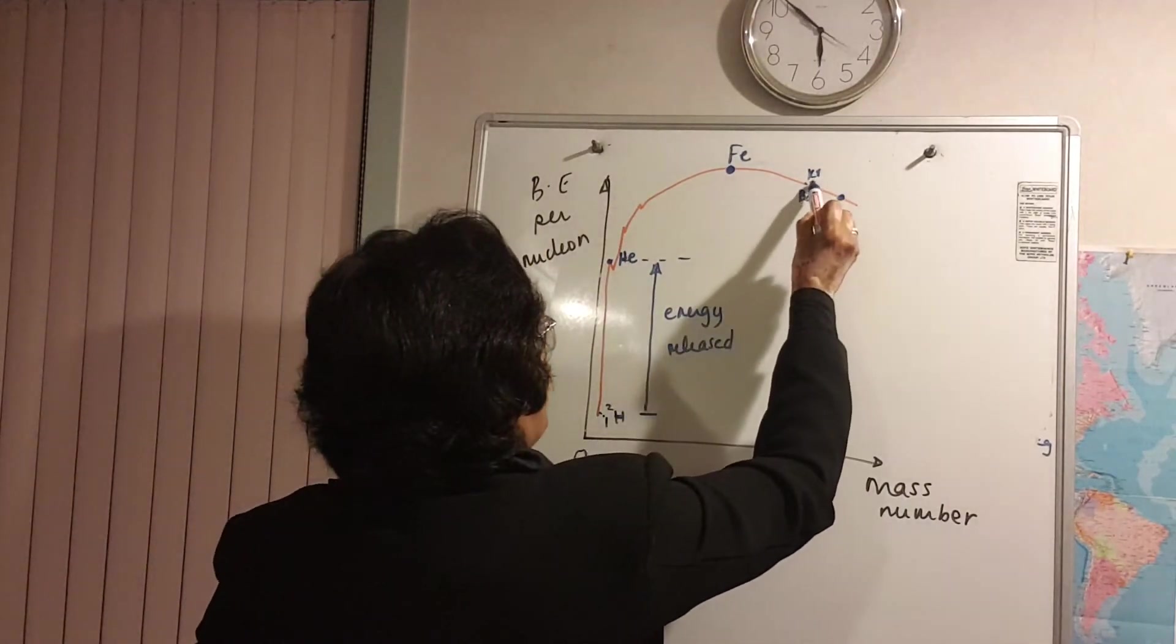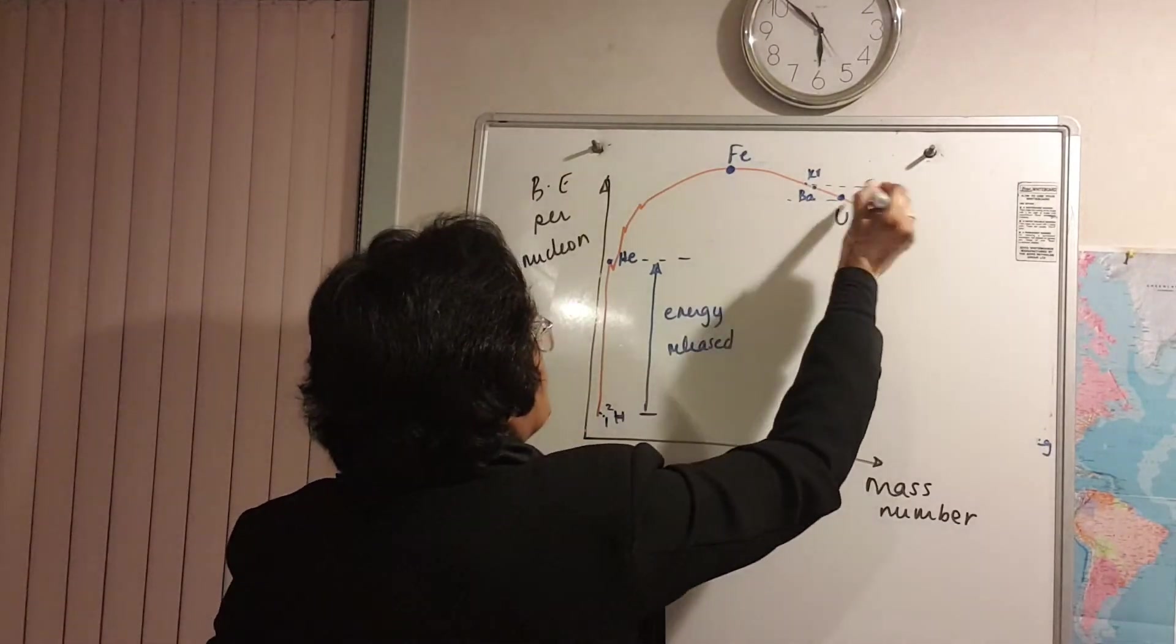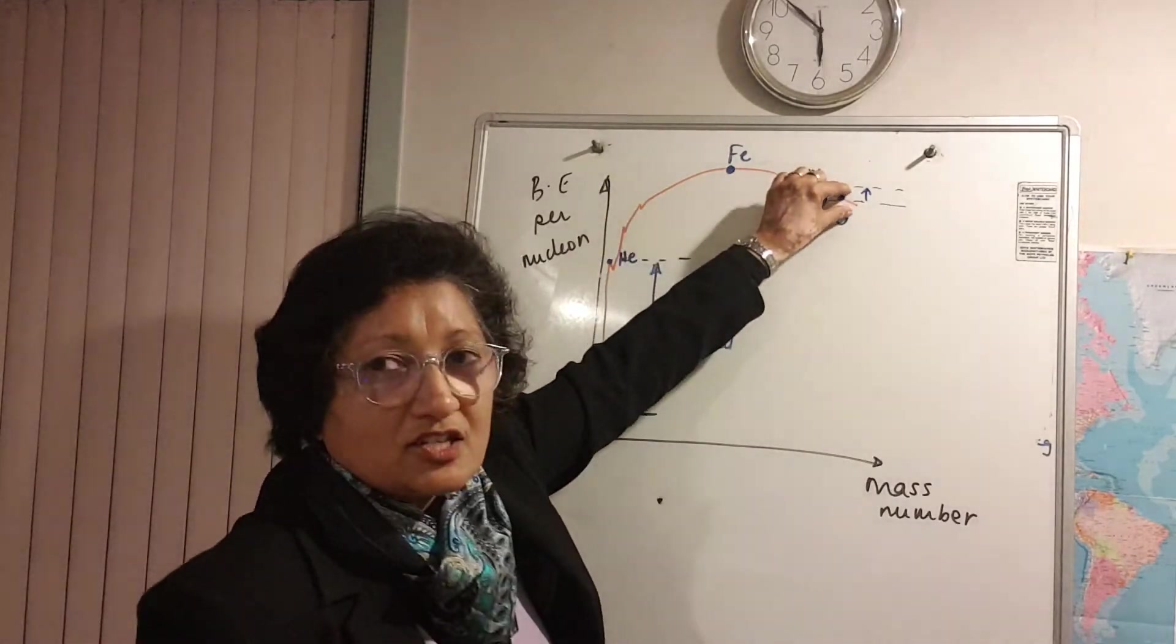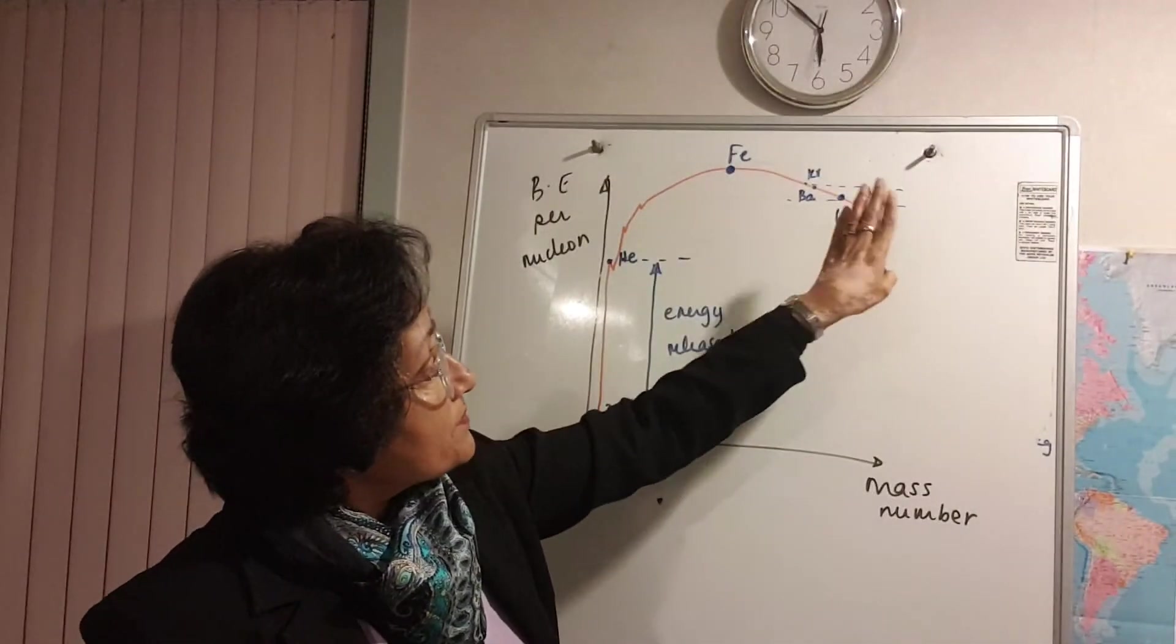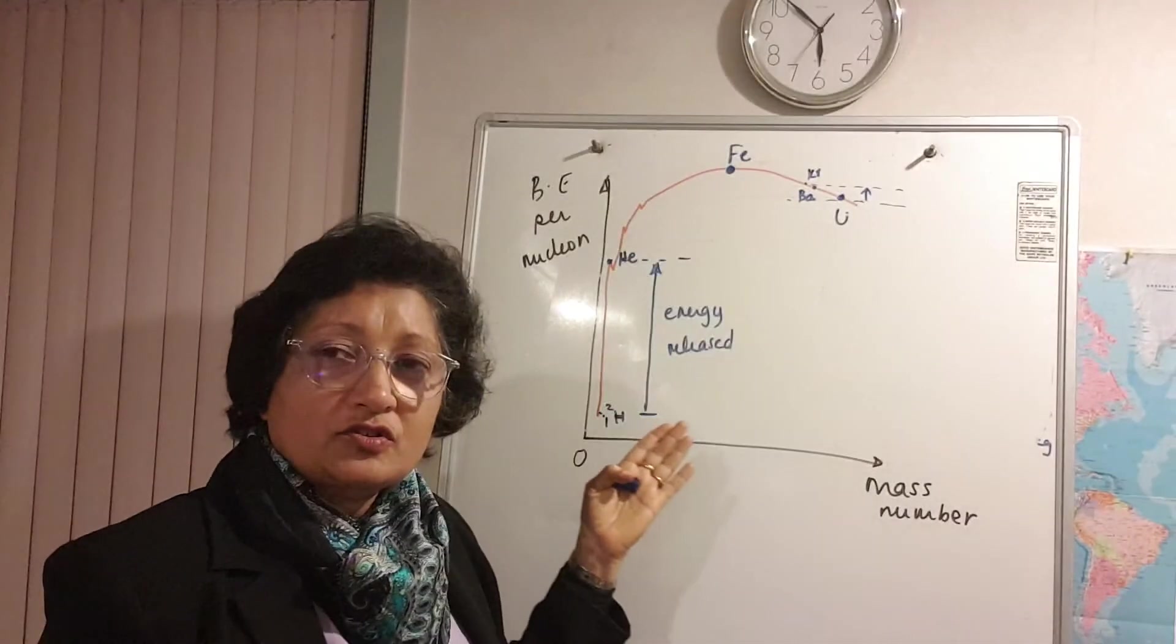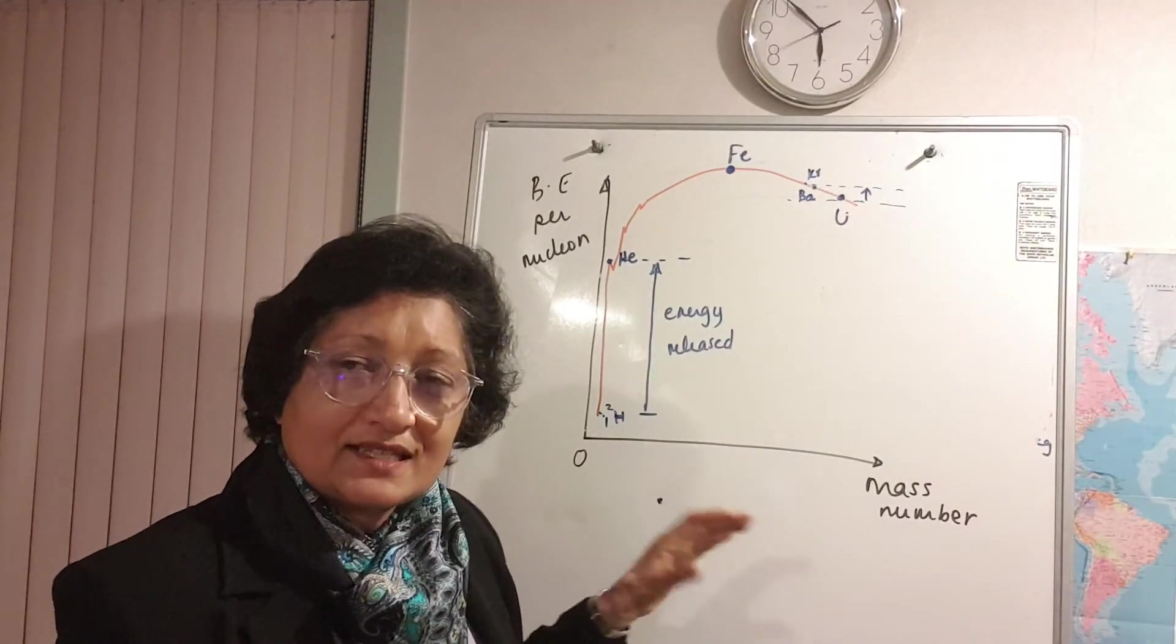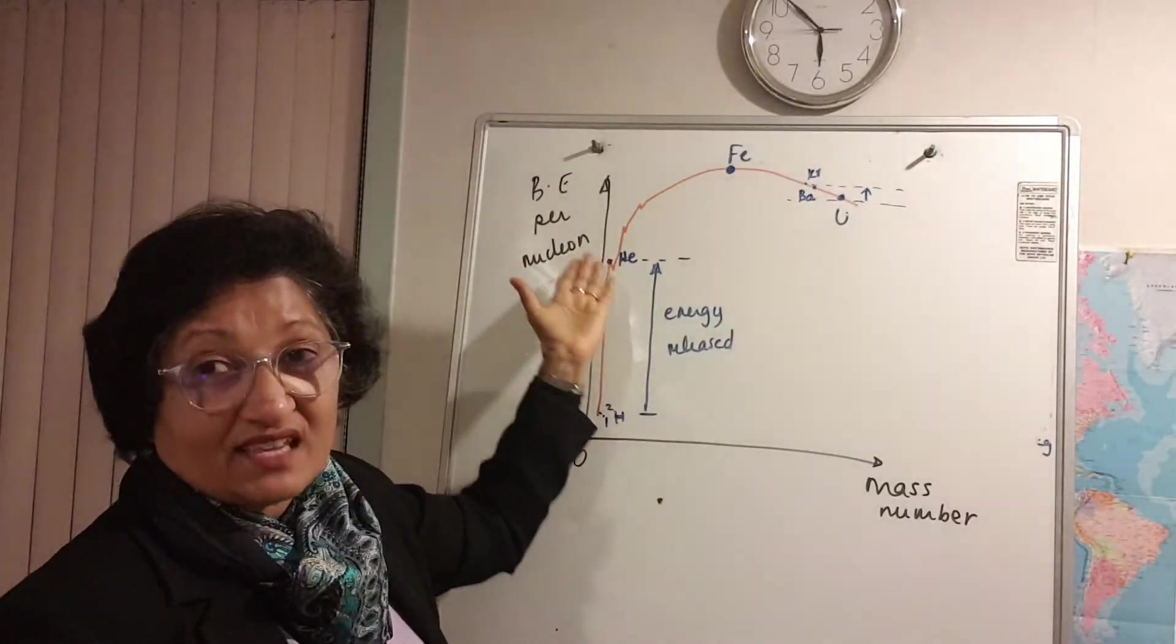When uranium undergoes nuclear fission to produce barium and krypton, the amount of energy released is much less. It's really massive compared to a chemical reaction, but when you compare fission and fusion, fusion produces much more energy. The other thing about fusion reaction is that the products of fusion are quite clean, it's just helium.